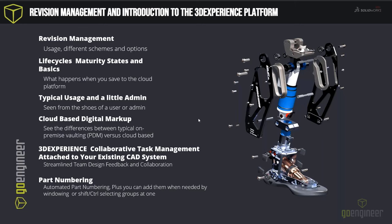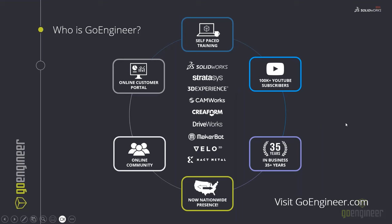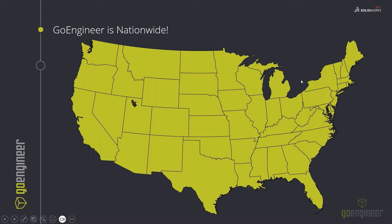Just before we get started, a little bit on GoEngineer and who GoEngineer is. I think you all know we're the SOLIDWORKS reseller — actually the number one SOLIDWORKS reseller in the U.S. That's not our only product though. We have Stratasys and the 3DEXPERIENCE platform products, the CATIA products that fall under that line, and a myriad of other products. If you want to see more about these products, you can go to GoEngineer.com. We are nationwide now, so anywhere you're coming from, we should be able to support you remotely, on-site, or with a local office.